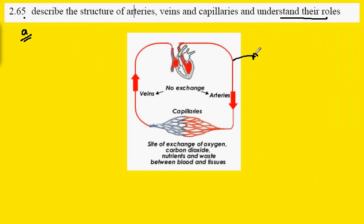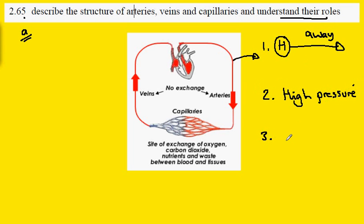This is an artery. All arteries take blood away from the heart. The second characteristic of arteries is that their blood is under high pressure. And the third characteristic is that blood is being delivered to an organ, another organ in the body.